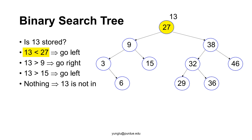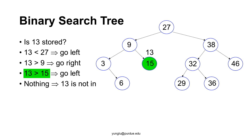Consider this binary search tree. These numbers represent student IDs in a student database. We want to know whether 13 is stored in the tree. First, we compare 13 with the root node, which stores 27. Since 27 is greater than 13, it is impossible to find 13 in the right subtree. We search 13 in the left subtree only. Next, compare 13 with 9. Since 13 is greater than 9, it is impossible to find 13 in the left subtree of node 9. We search 13 in the right subtree. Comparing 13 with 15, since 13 is smaller, but node 15 is a leaf node with no child, 13 is not stored in this binary search tree.